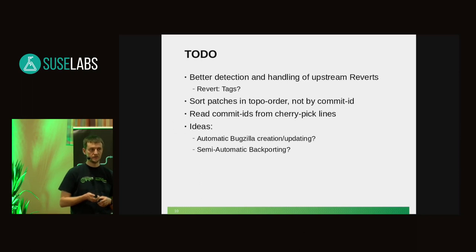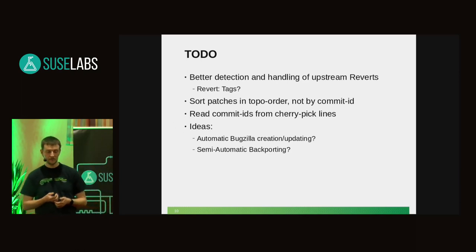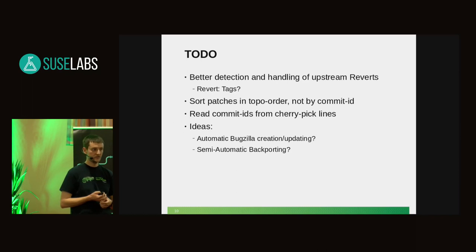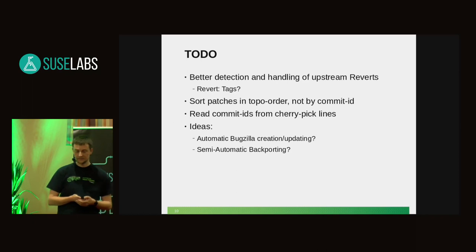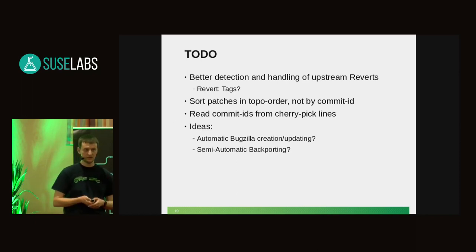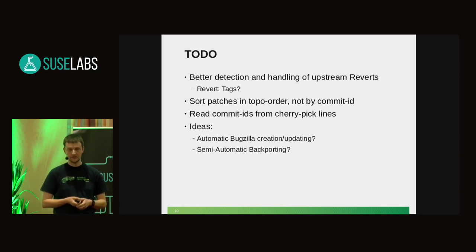Another concern raised by multiple people is that the patches are sorted by commit ID when they appear in the emails. This comes from the data structure used when they are tracked in the tools — basically a C++ map, so they are sorted by design. The request is to sort them in topological order — in the order in which they appeared in the Linux tree. I need to add some tracking and sorting to make the output correct.